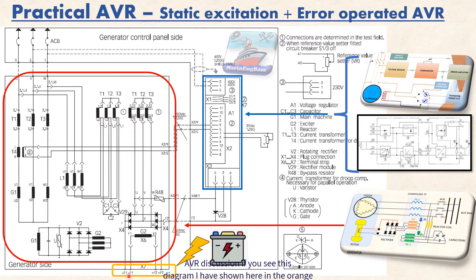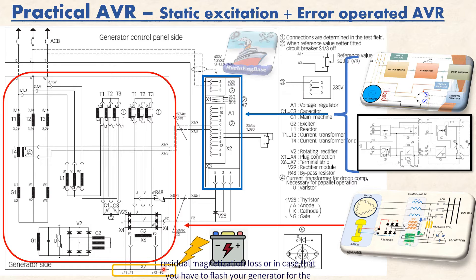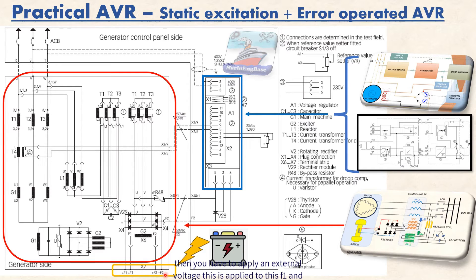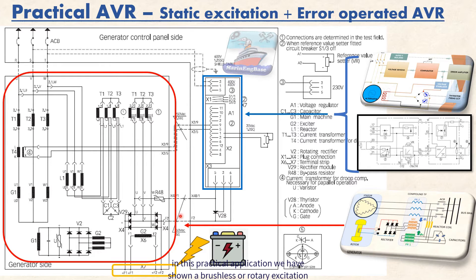In this diagram, I have shown in orange color with a battery symbol — these terminals are provided for field flashing. In case you have lost residual magnetism, or in case you have to flash your generator for the very first time, you have to apply an external voltage. This is applied to the F1 and F2 terminals. In this practical application, we have a brushless or rotary excitation system.